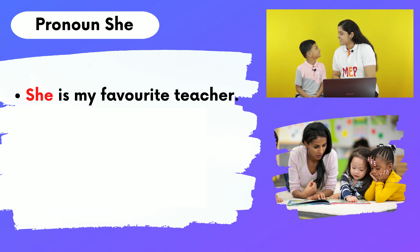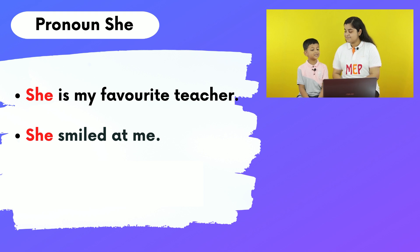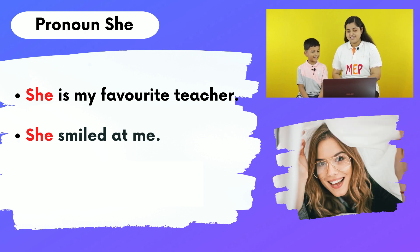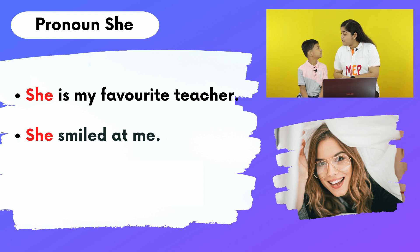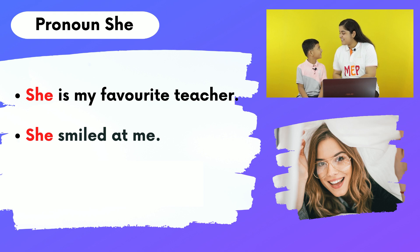I understood. So Rudy, read the second example. She smiled like me. Correct. In this sentence we have used the pronoun 'she' because we are talking about the third person singular — feminine. That's right.